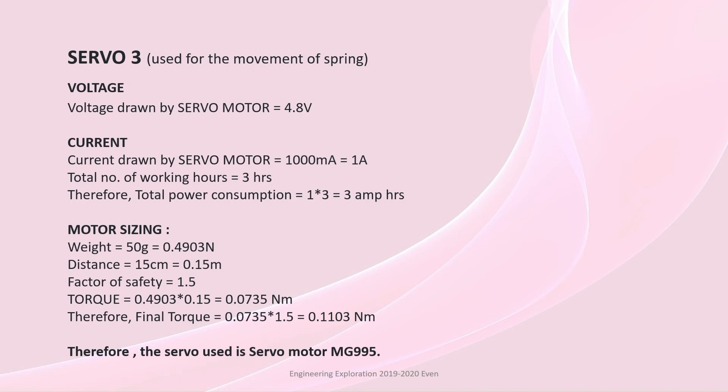Servo 3 is used for movement of spring. Voltage drawn is 4.8V, Current 1A. This also works for 3 hours. Total power consumed is 3A. Total torque here is 0.1103Nm. Therefore the servo used is MG995.